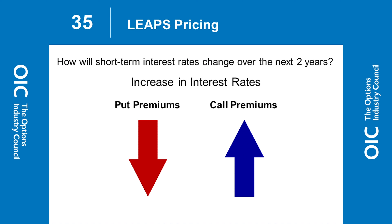A couple tidbits before we turn it back to Alex for questions. Short-term interest rates – how will they change over the next two years? If we get an increase in rates, put premiums go down and call premiums go up. That's based on the option models. Rates have inched up a little bit here but they're still relatively stable. But if you're using leaps, hopefully you are taking the interest rate factor and your assessment of rates a couple years out into the equation. Go to that pricing calculator and see how call and put premiums may be impacted by a 1% change in rates.